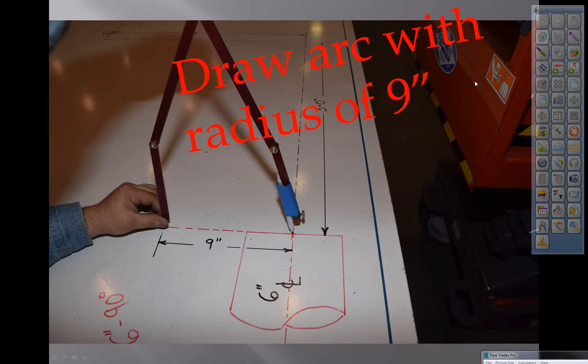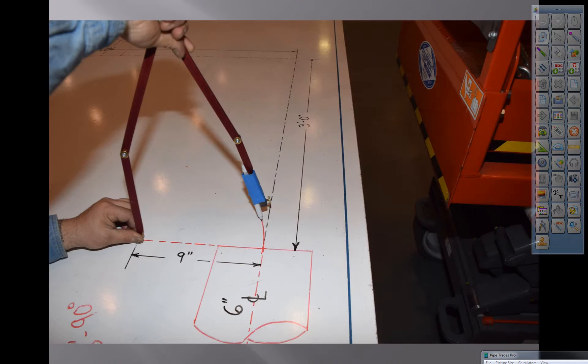If you're working on concrete, you would use soapstone. I'm on a whiteboard, so I'm using an erasable marker. Nine inches is the radius of a six inch long radius weld 90.